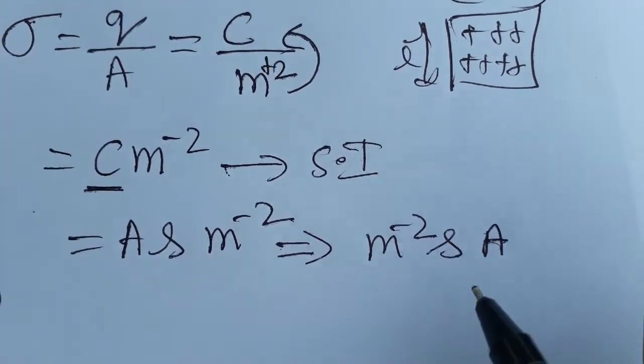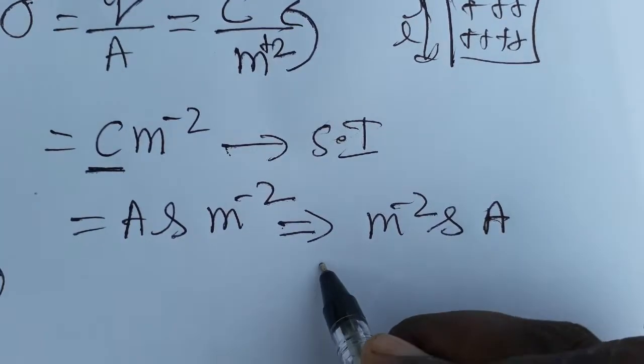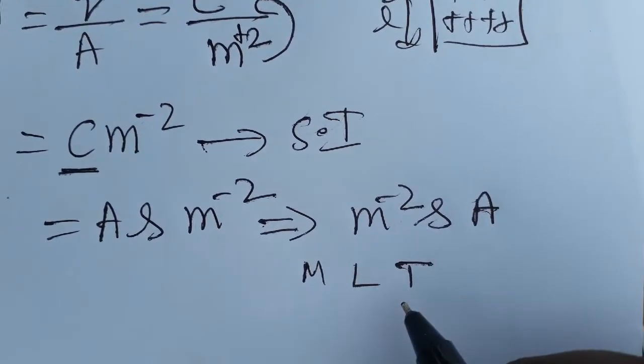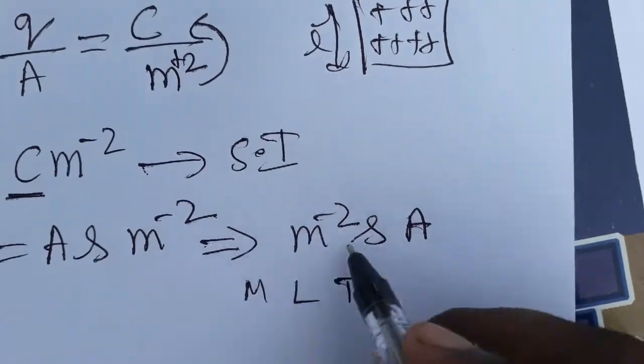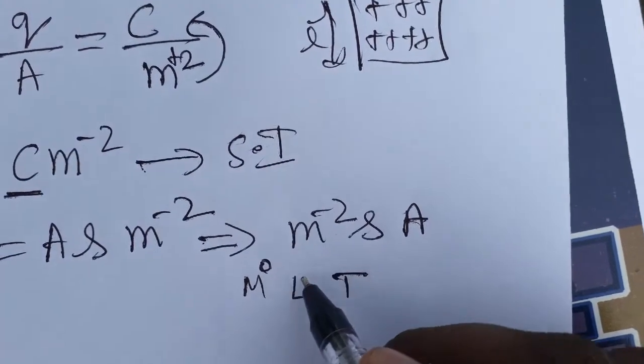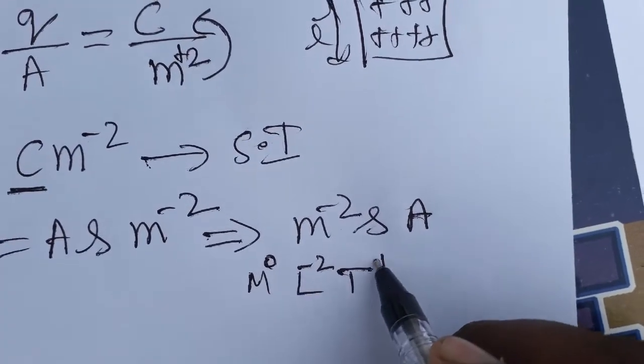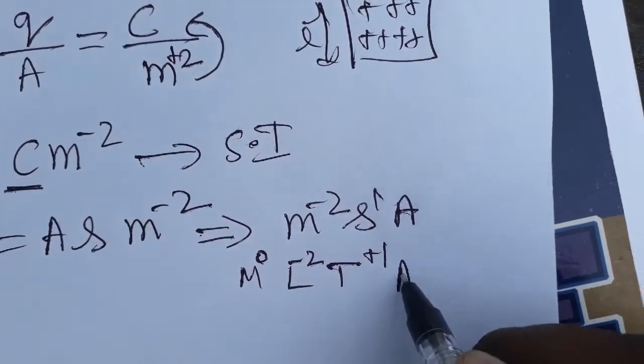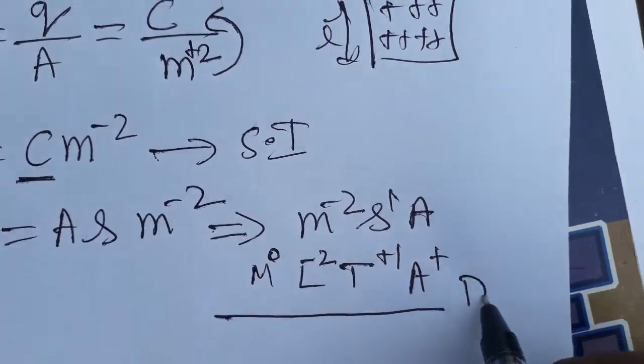I am modifying properly: M minus two, A. Why? Mass, length, time, and current, like that you will modify, then only it will be easy. Here there is no mass, zero. Length is there, L power minus two. Time is there, T power one. Current is also there, ampere plus one. It is the dimensional formula.